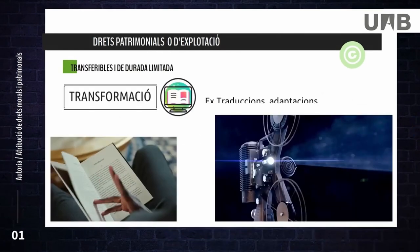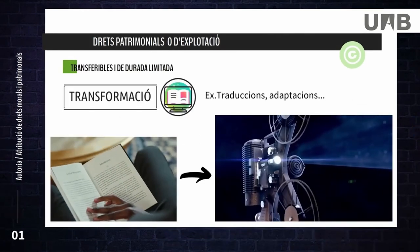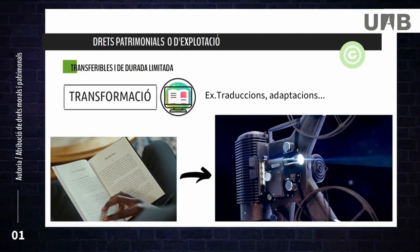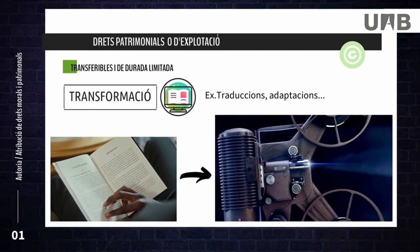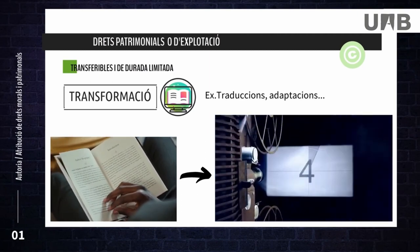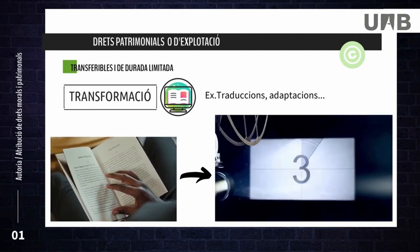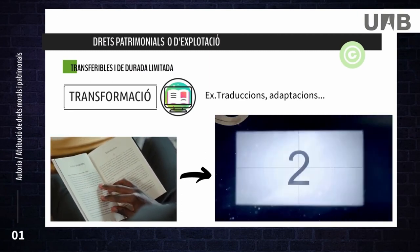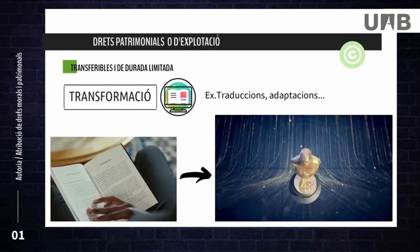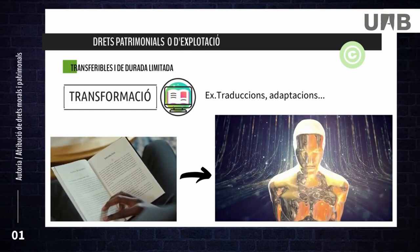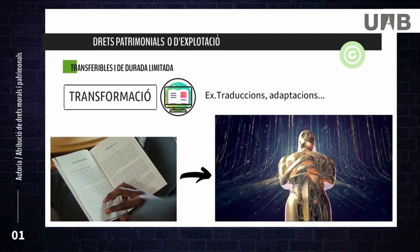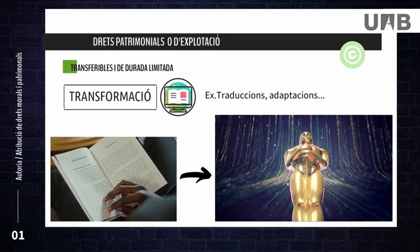Finally, the right of transformation involves modifying a work and acquiring ownership of the derived work. An example is when the author of a novel sells the right of transformation to a production company to make a film. In this case, the author of the film is no longer the novelist.